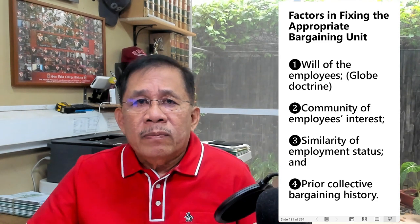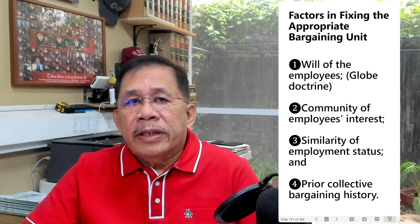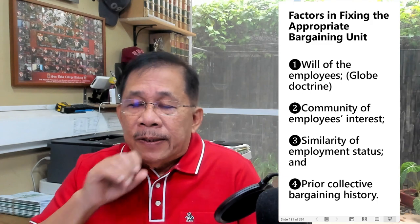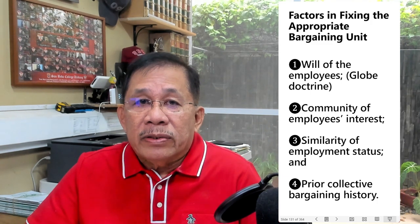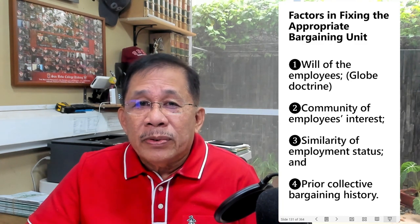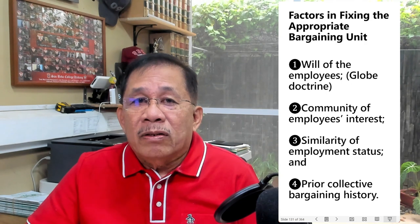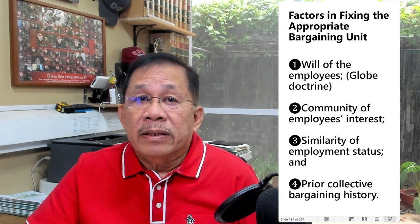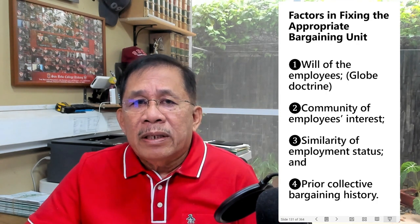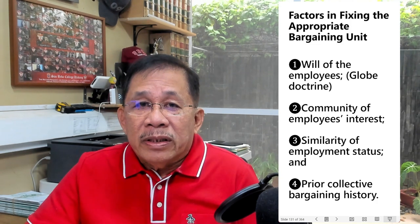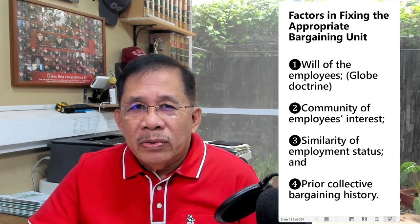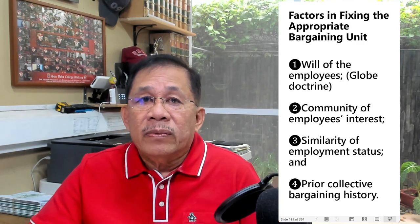Under the Globe Doctrine, the main consideration in fixing the appropriate bargaining unit is the express will or desire of the employees. The Doctrine sanctions the holding of elections, not for the purpose of determining the bargaining agent, but for the specific purpose of permitting the employees in each of the several categories to select the collective bargaining unit. Under the Community of Interest Rule, the main consideration is the affinity and unity of employees' interests, such as substantial similarity of duties or similarity of compensation and working conditions.